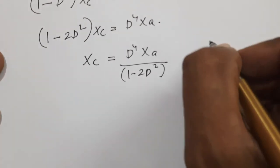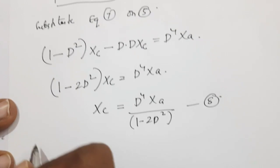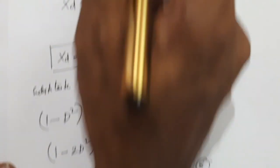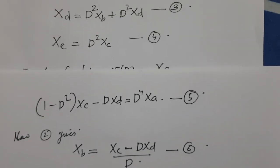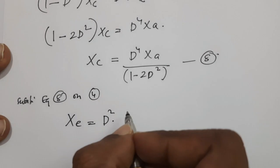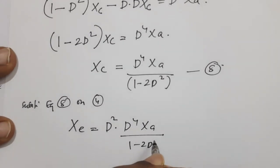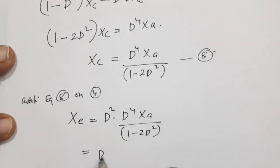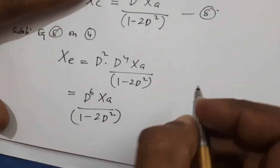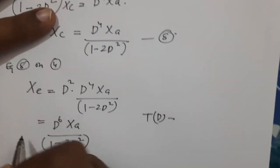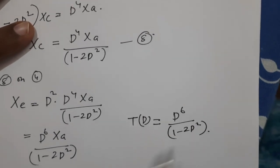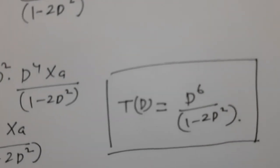Substituting equation 8 into equation 4: XE = D^2·XC = D^2 · D^4·XA / (1 − 2D^2) = D^6·XA / (1 − 2D^2). Therefore the transfer function T(D) = XE/XA = D^6 / (1 − 2D^2). This is the transfer function for the given convolutional encoder.